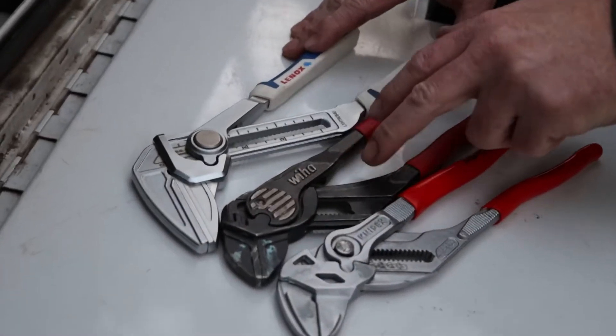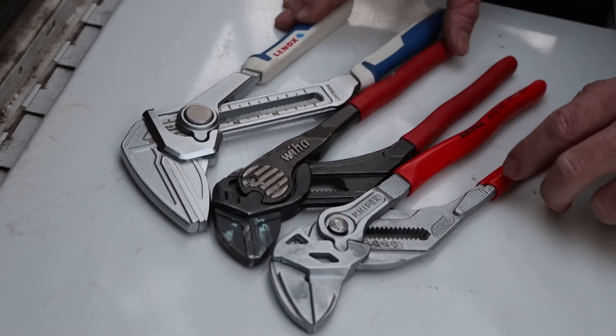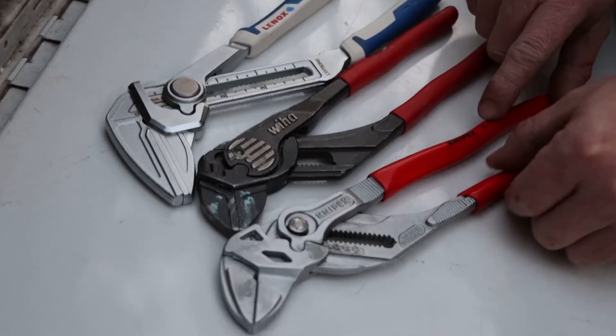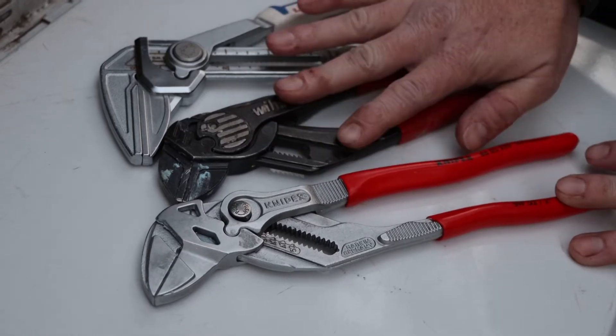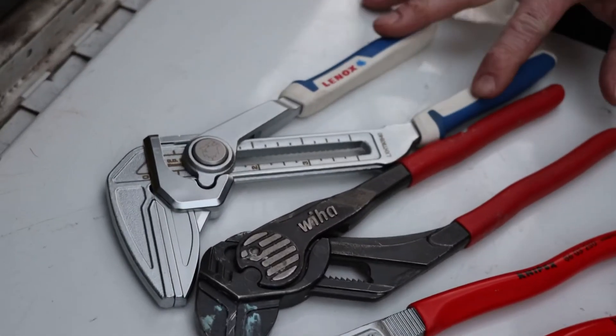Alright guys, I got three different styles of what they call the pliers wrench here. I got the Knipex, and yes the K is pronounced—it is Knipex. I got the Weeha and then I got the new Lennox style.